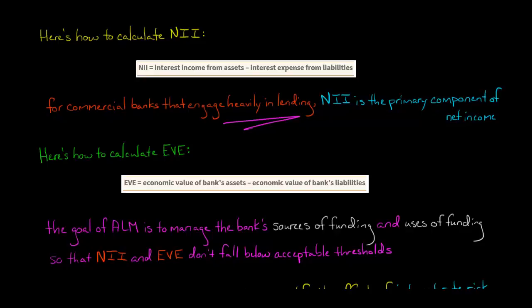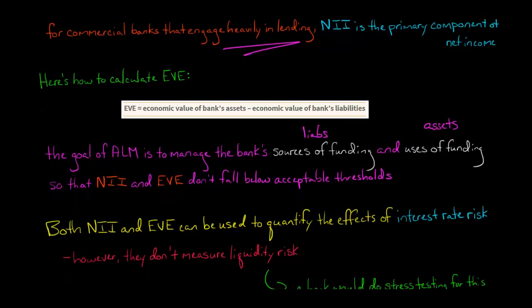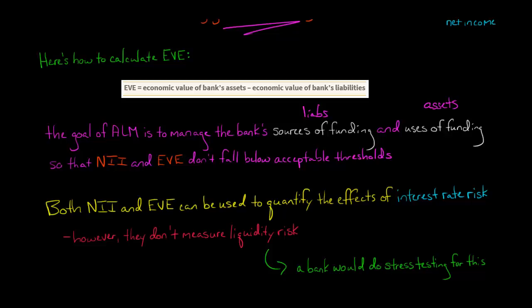Just to recap, we had said that we're trying to manage the sources of funding of the bank, which are liabilities, and uses of funding, how the bank deploys that capital, which are the assets like lending. So the goal of ALM is to manage these sources of funding and uses of funding, the assets and liabilities, so that net interest income and economic value of the bank's equity don't fall below certain thresholds that the executive team has deemed to be acceptable.